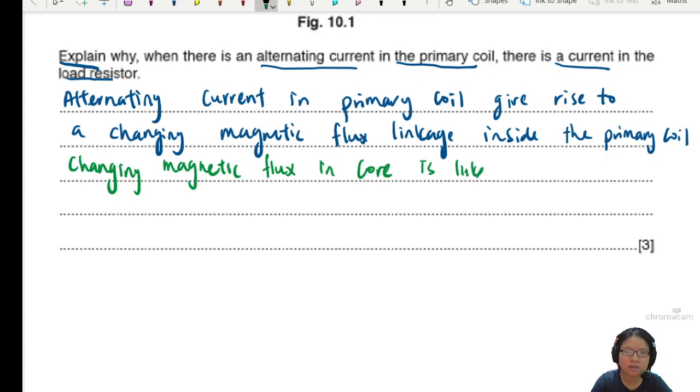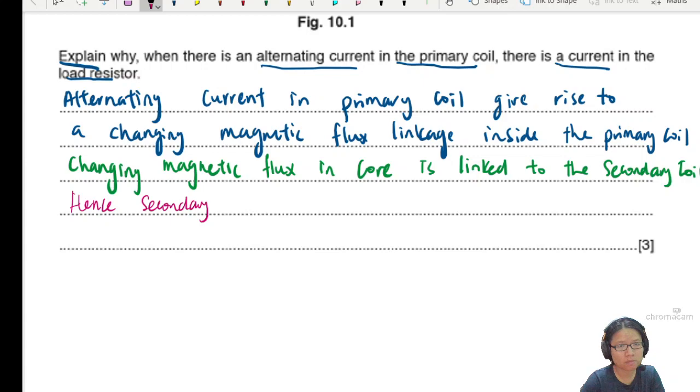So I will then say that the changing magnetic flux from here, because we already write down the full term, you can just say changing flux or changing magnetic flux in the core is linked to the secondary coil. And what happens? Because it's linked when there's a changing flux in the primary coil means that there's a changing flux in the secondary coil.